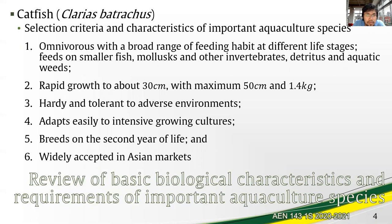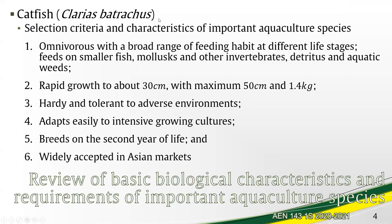There are six selection criteria and characteristics of the Clarias batrachus species. We start with feeding habits or nutrition. Number one: it is omnivorous, having a broad range of feeding habits at different life stages. From larvae to the fry or fingerling stage, it feeds on smaller fish, molluscs, and other invertebrates, as well as detritus and aquatic weeds.